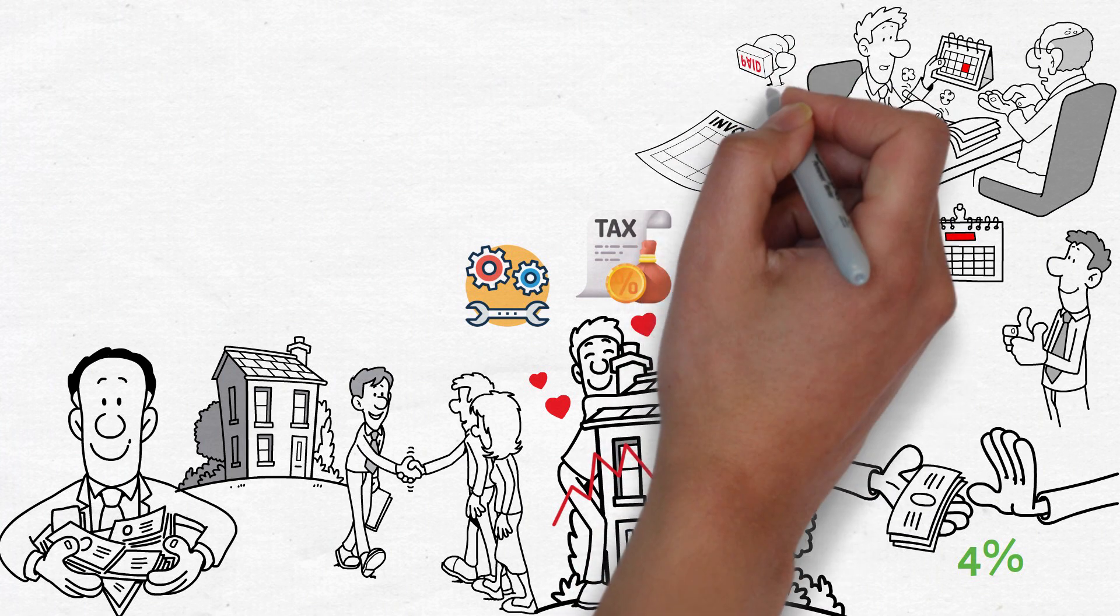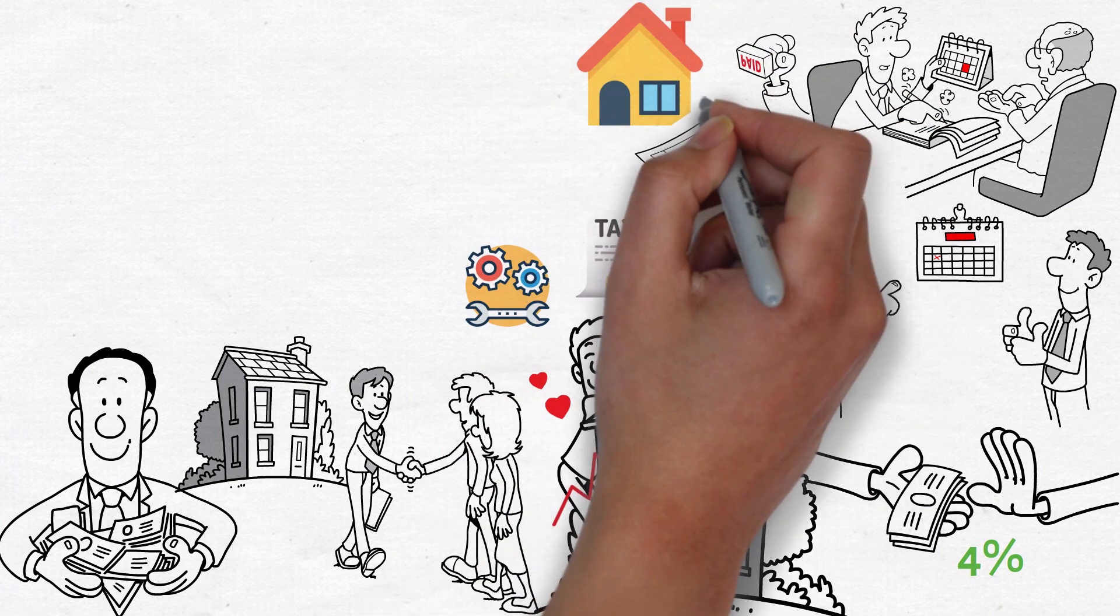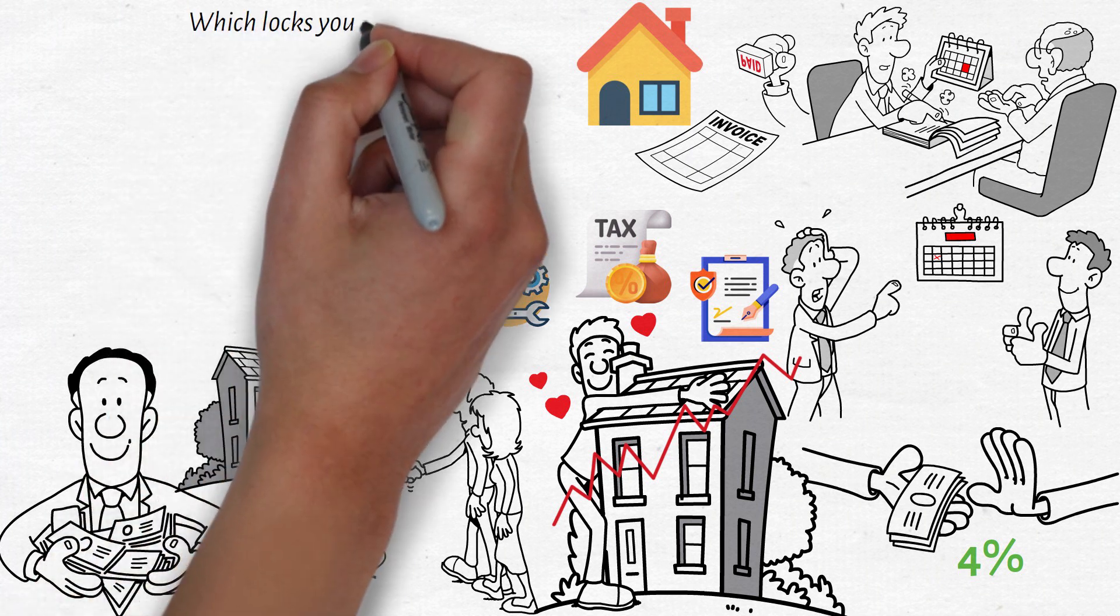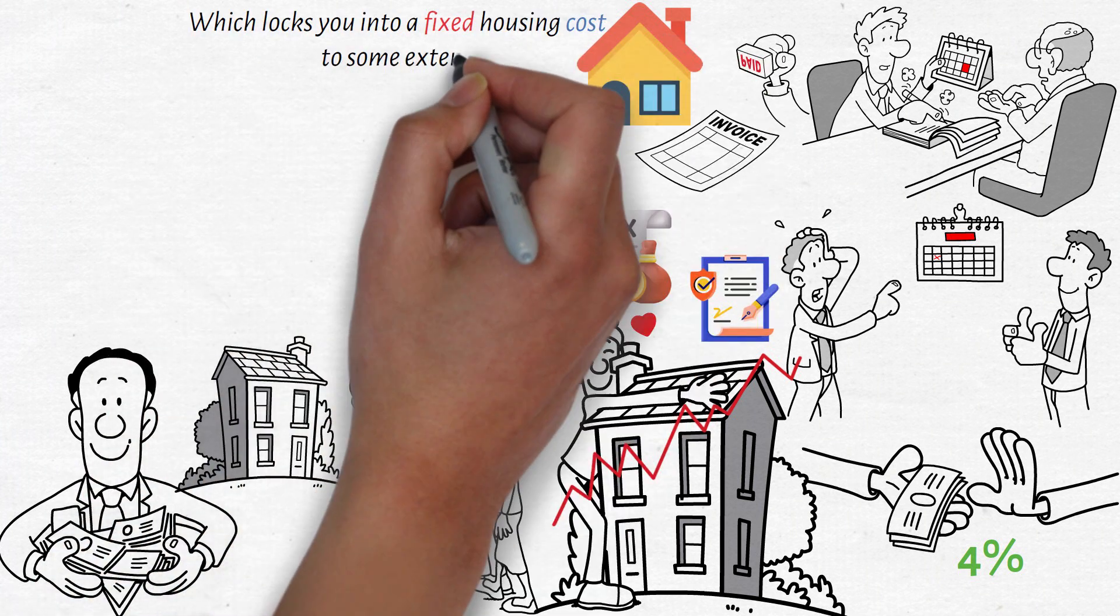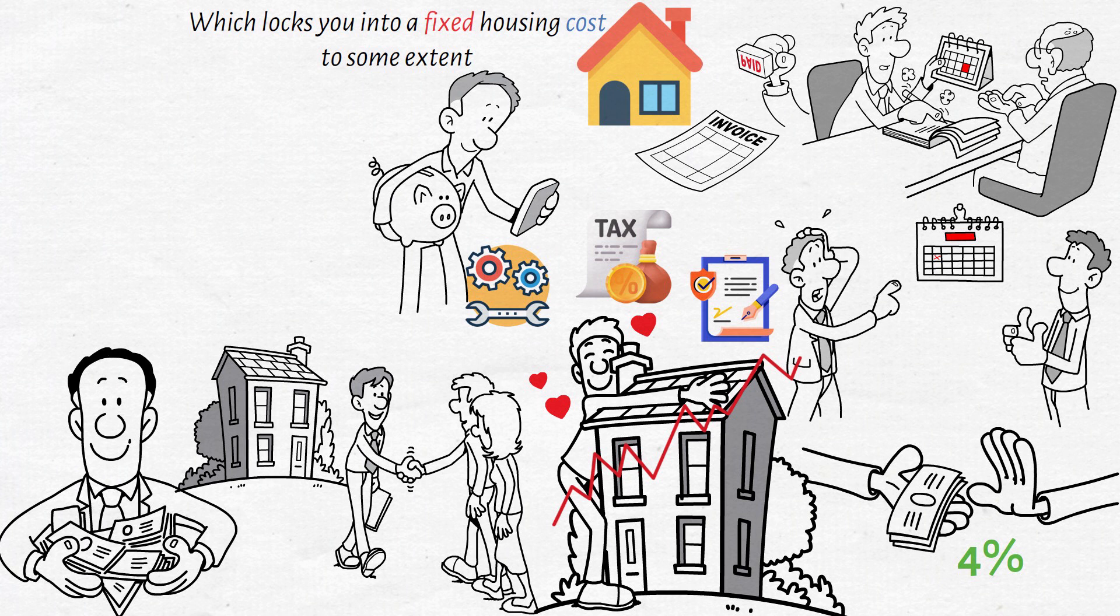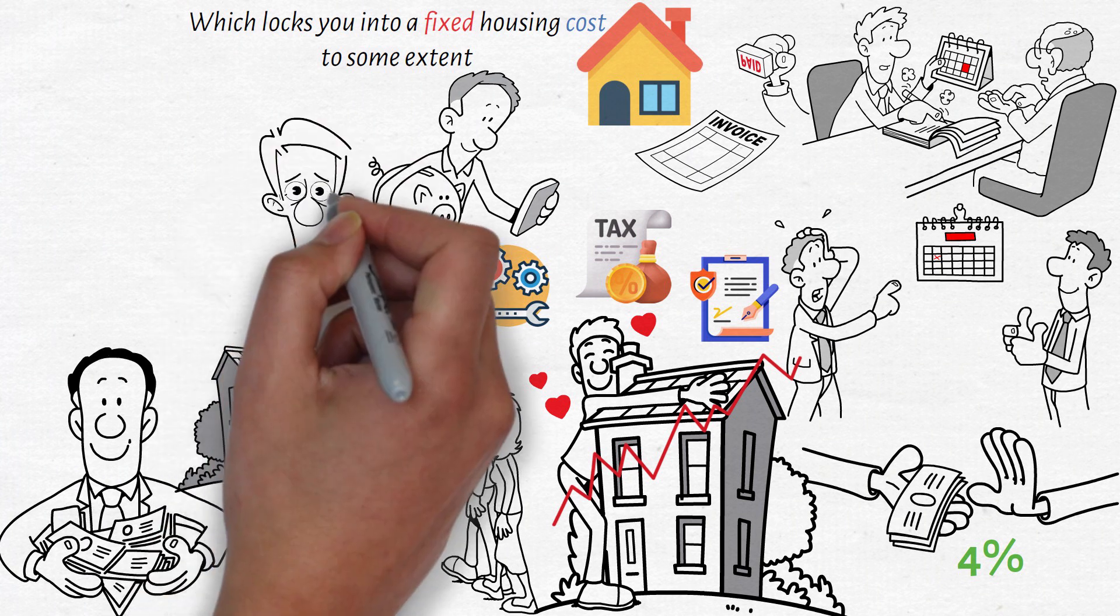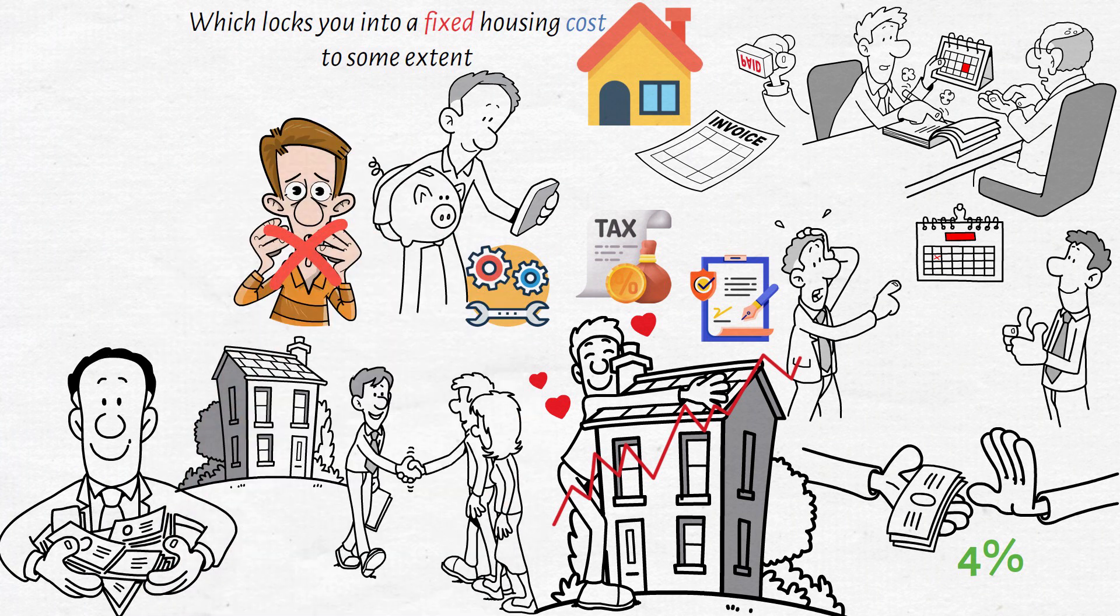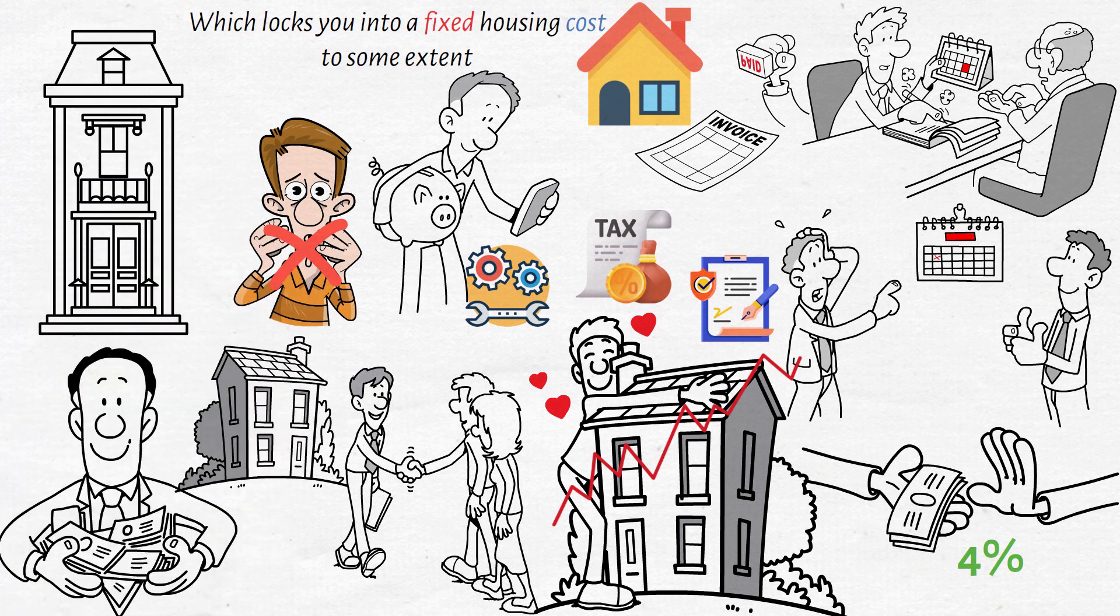The price you paid for the property and the mortgage payment will remain the same, which locks you into a fixed housing cost to some extent. This puts you in a much better position as you try to save aggressively for retirement, and you'll no longer wonder if you can afford it or if your housing costs are going to skyrocket.